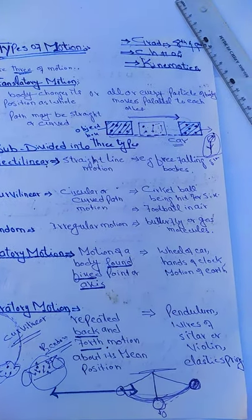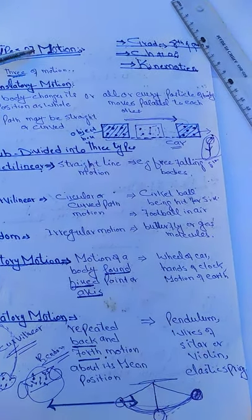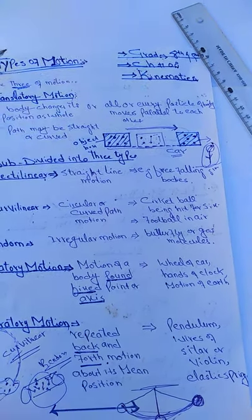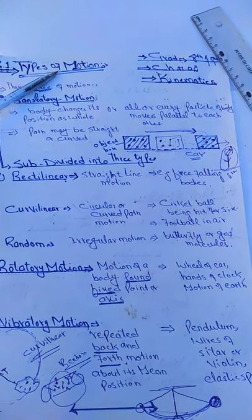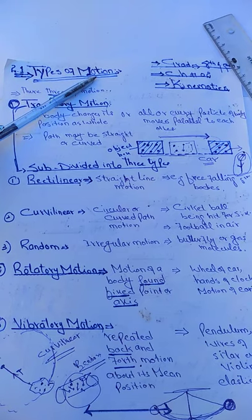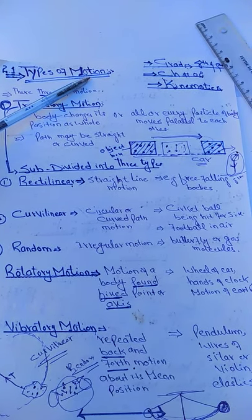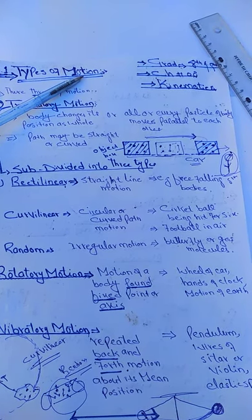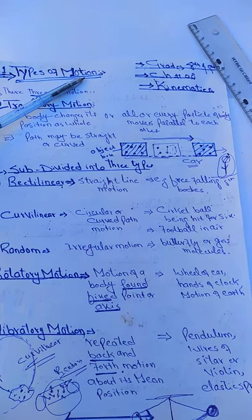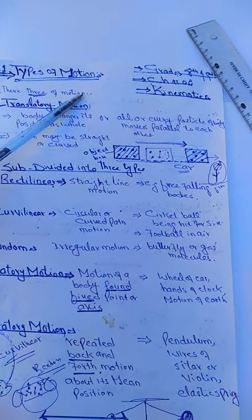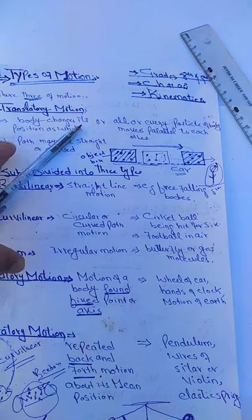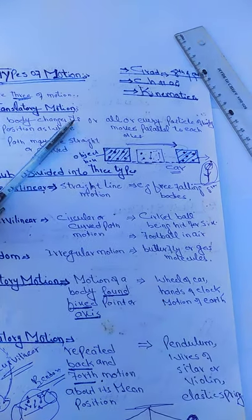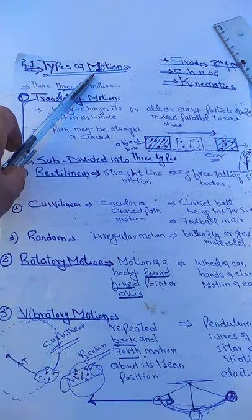Assalamu alaikum dear students. Today we discuss types of motion, that is Chapter 2 Kinematics, topic number 2.1 - types of motion. Before we discuss types of motion, in our previous lecture we discussed motion in detail. Motion is that type of thing in which a body changes its position with respect to its surroundings with the passage of time.